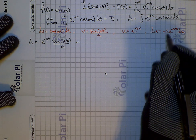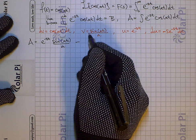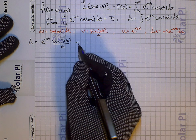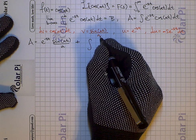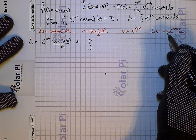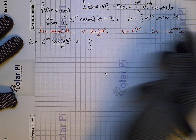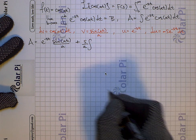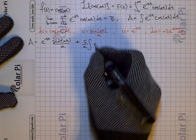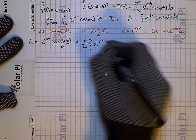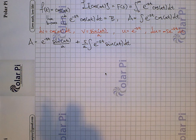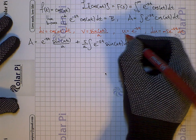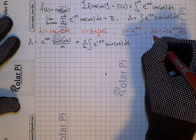Then minus the integral of v du. Notice that du comes with a negative sign and v is positive, so minus v du is going to give us a plus. And then v has a constant a in the denominator, and du has a constant s in the numerator, so I can factor out s over a. Inside the integral is e to the negative st times sine of at dt. Unsurprisingly, this integral is going to require integration by parts again, with the same pick of u and therefore the same du.